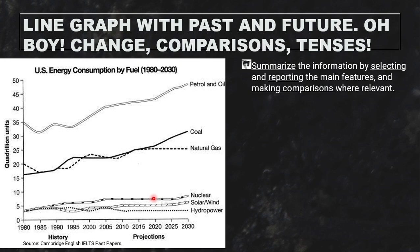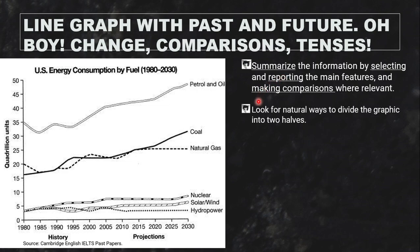For task achievement, the band descriptor says 'addresses all parts of the task well.' Every Task 1 must summarize, select main features — not just any features, but main features — report those features accurately, and make comparisons. With any Task 1, it's good to look for a natural way to split it into two halves to guide your body paragraphs.